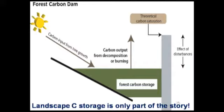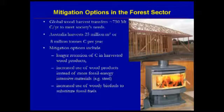As a dam fills, surface area increases and evaporation losses rise — analogously, as a forest stores more carbon, the probability of fire goes up and losses from fires increase. The height of the dam wall represents the biological maximum carbon carrying capacity, which may never be attained due to wildfire. But landscape carbon storage is only part of the story — we also have options involving wood products, with globally about 750 million tons of carbon transferred into wood products annually, and in Australia about 8 million tons from 25 million cubic meters of wood harvested.